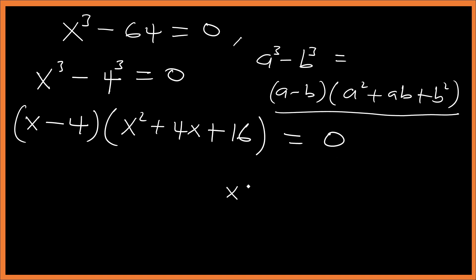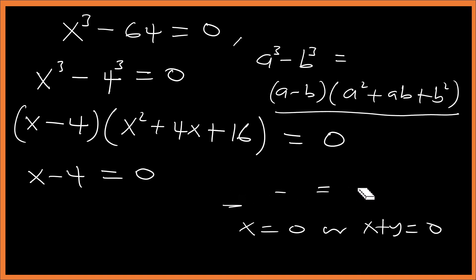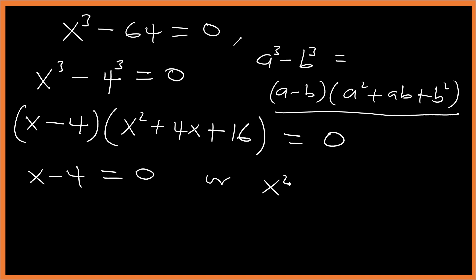When we have a product equal to zero, each factor can be zero. So we set x minus 4 equals zero, or x squared plus 4x plus 16 equals zero. Since the original power is 3, we expect three solutions.